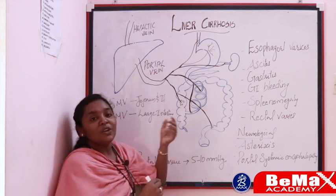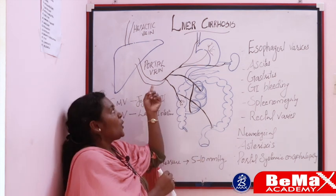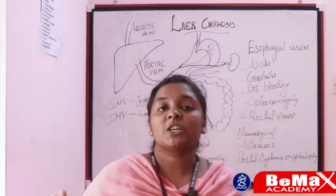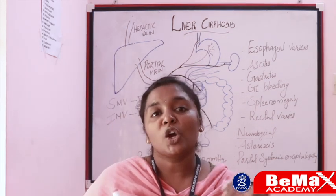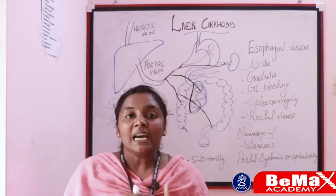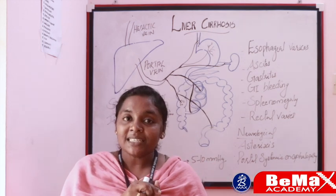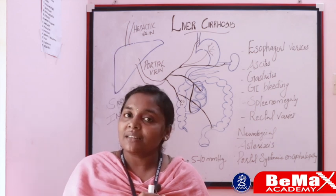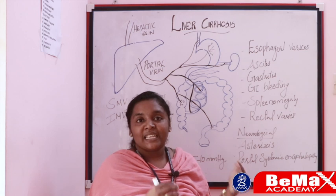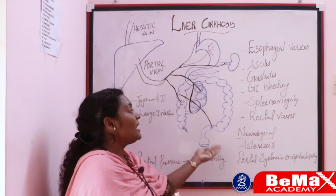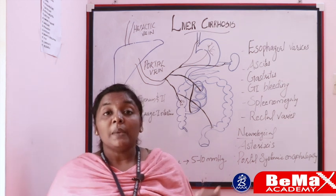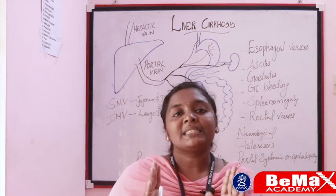These are the vessels which carry blood to the portal vein. This is why there is increased pressure. It is a complicated problem. The complications include esophageal varices, ascites, gastric varices, GI bleeding, splenomegaly, intestinal links, hemorrhoidal varices, and rectal varices. These are important for exams.